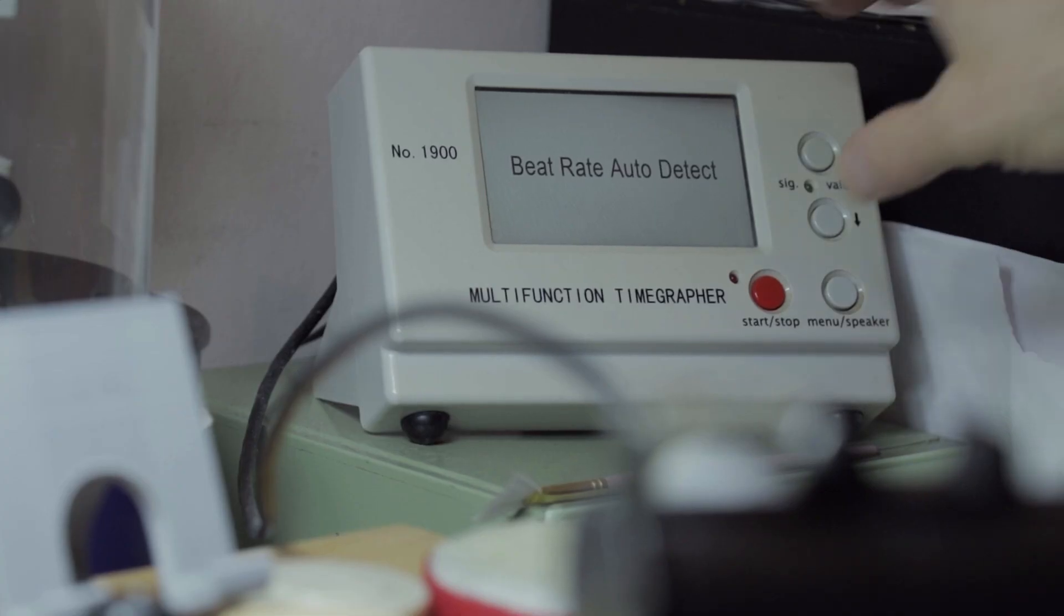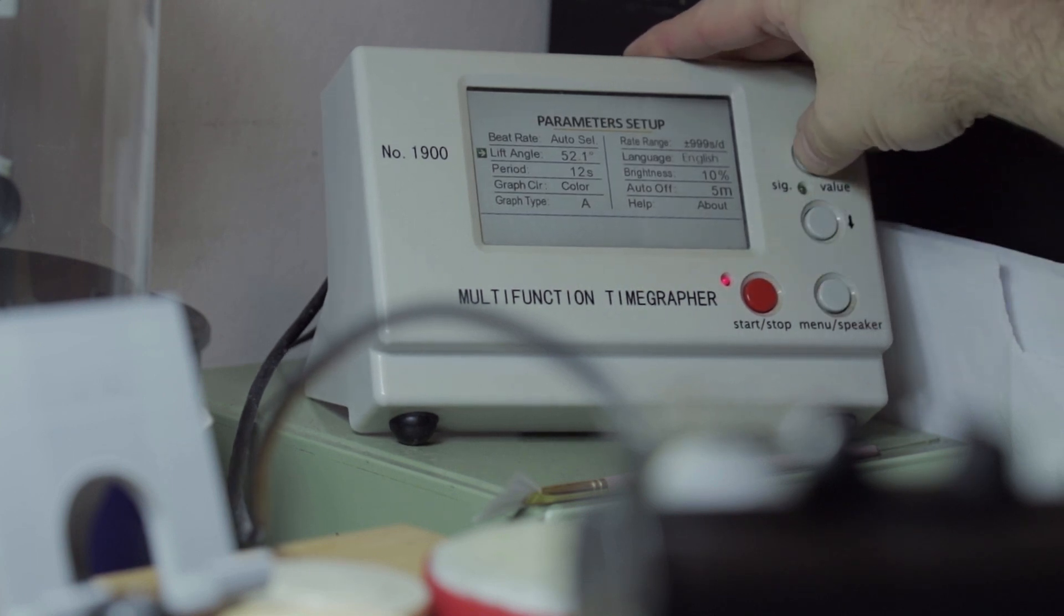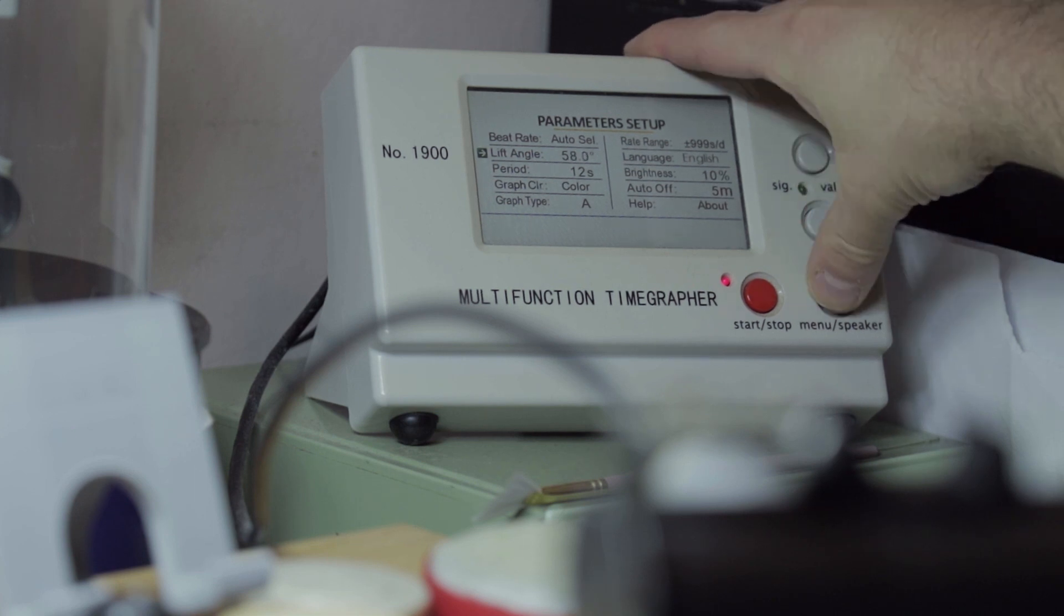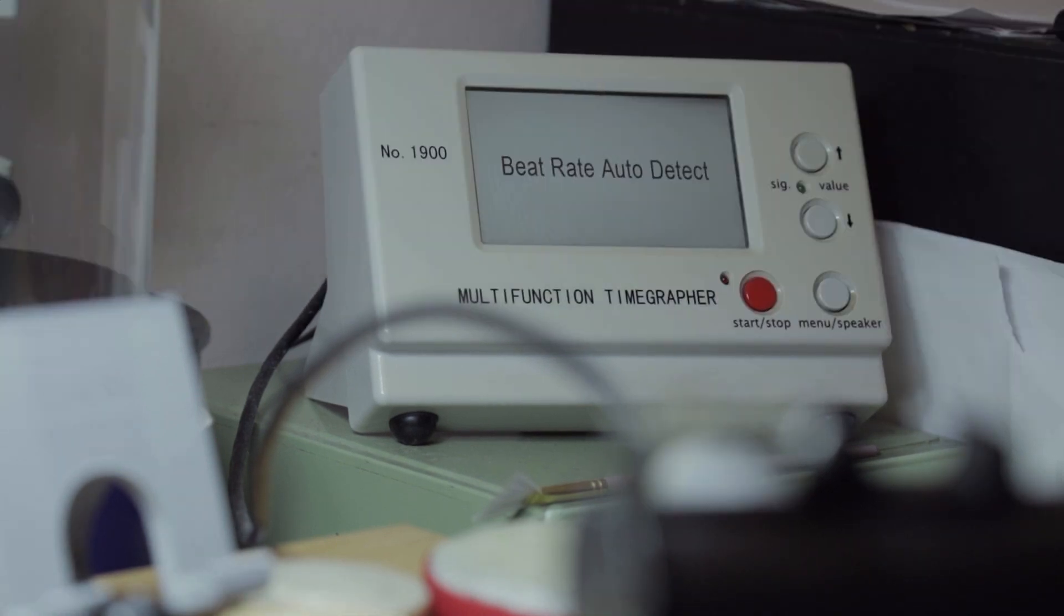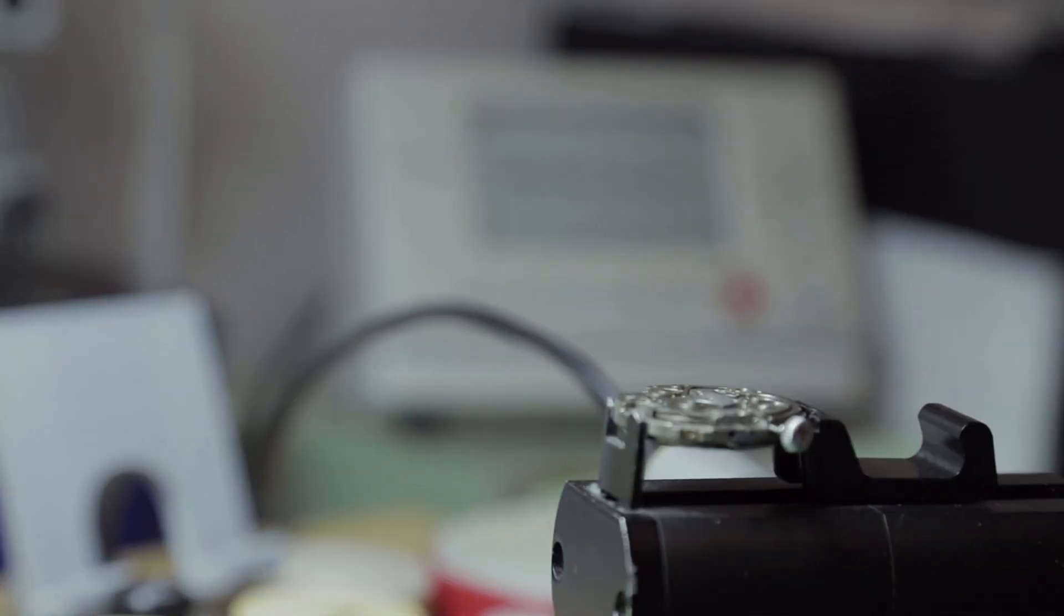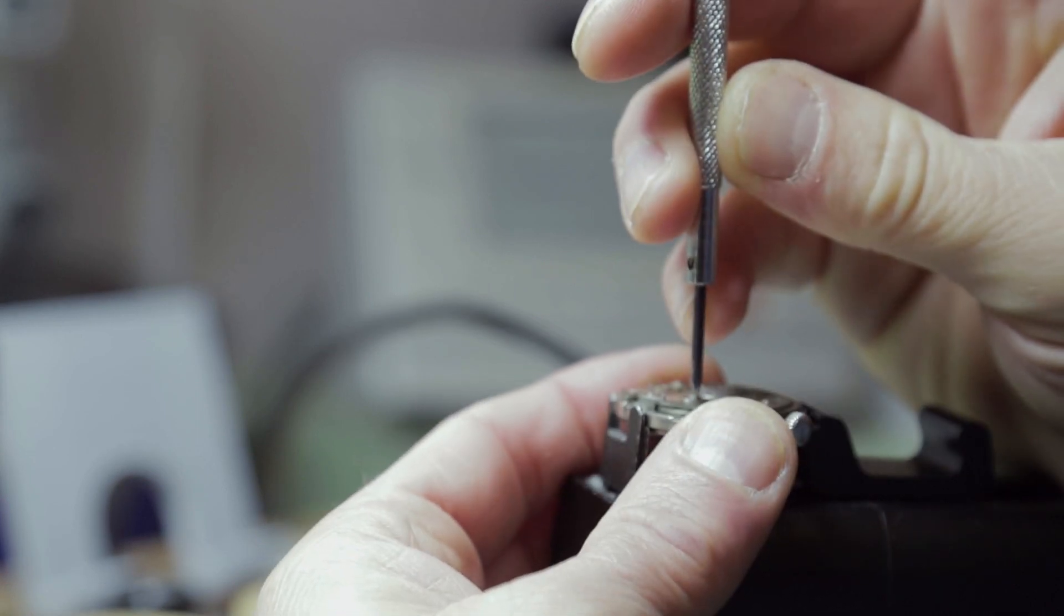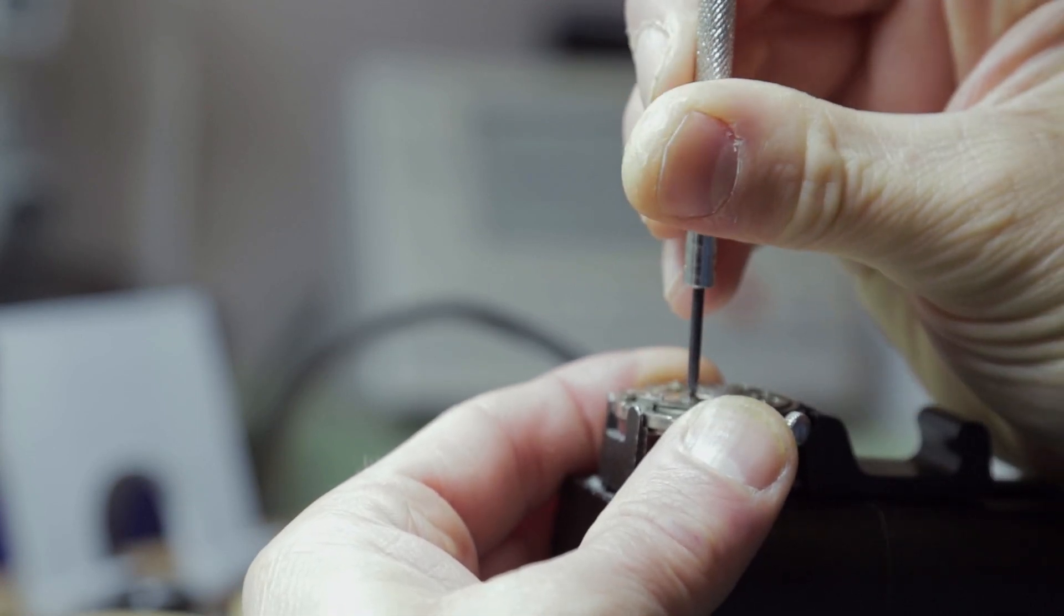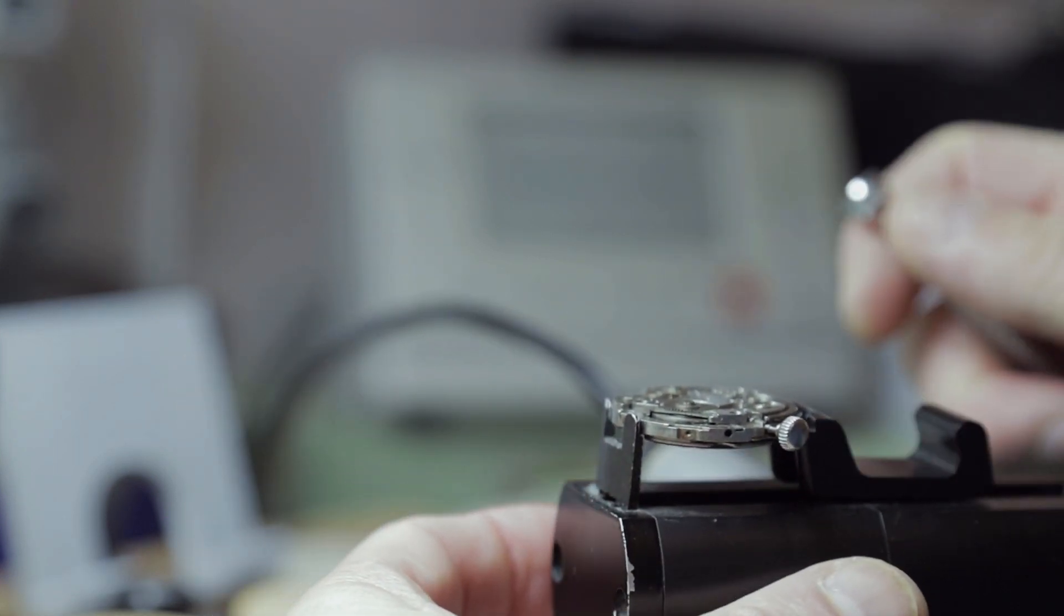So we'll switch on the time grapher, and first of all I'm going to set the lift angle to 58 degrees, which is near enough the claimed lift angle. And then going back to the movement, we're going to start winding the mainspring, and I'm just going to give that balance a nudge to get that started.